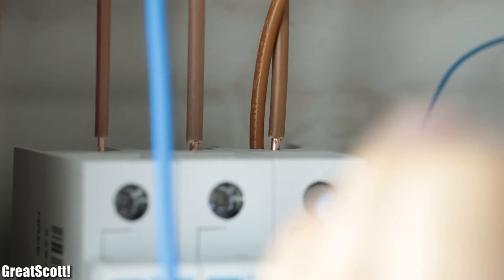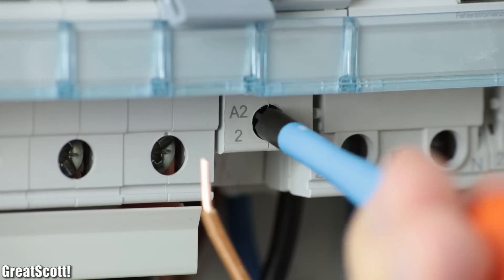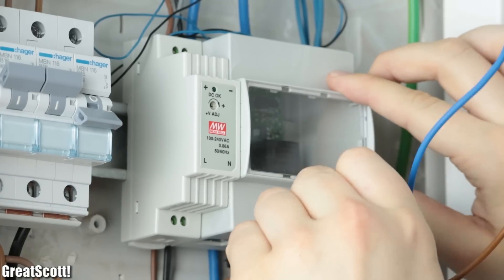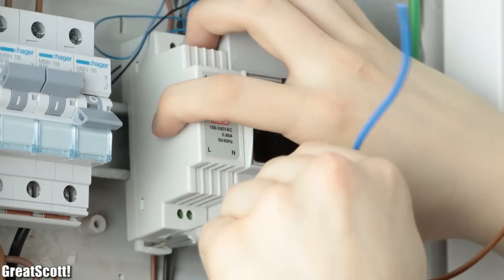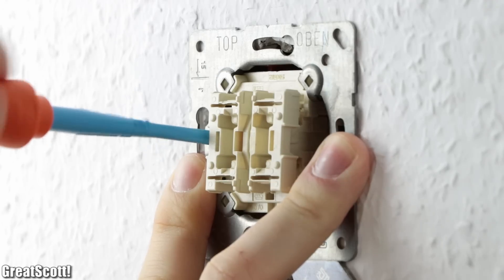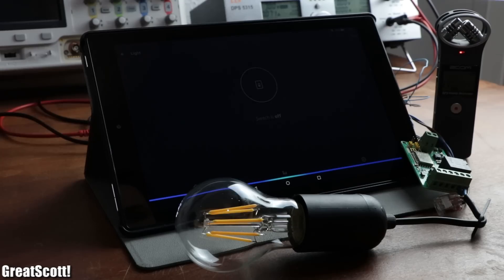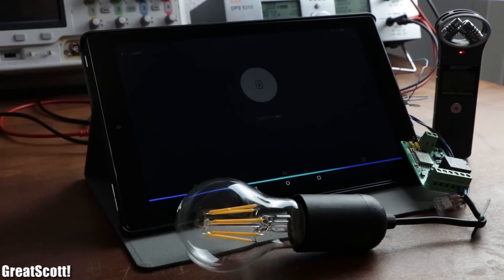But since I'm not such a big home automation enthusiast, I rather remove the system from my distribution box. But I still hope that this example gave you lots of ideas on how to utilize Alexa and an ESP8266 in order to control all kinds of things. But please handle mains voltage with care. As always thanks for watching. If you enjoyed the video then don't forget to like, share and subscribe. Stay creative and I will see you next time.